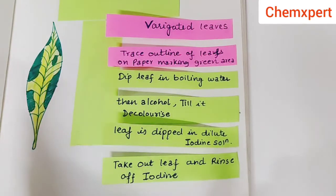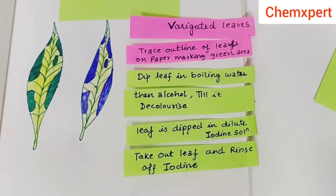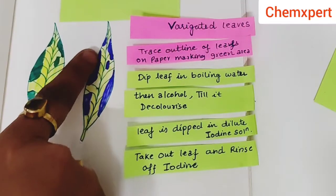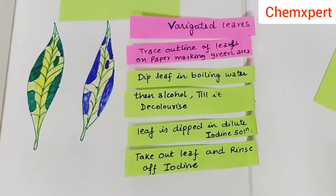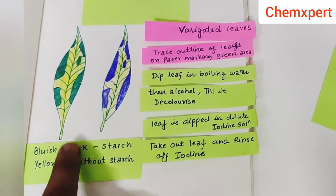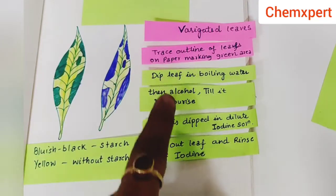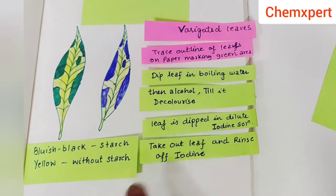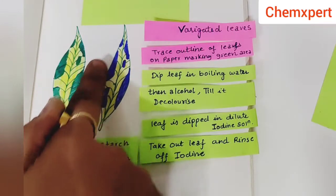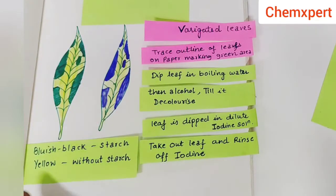Now for the observations: when we rinse off the iodine solution, the green part of the leaves turns bluish-black in color, and the rest of the part remains pale in color. We conclude that the bluish-black color occurs because of starch formation. The iodine test is performed to detect the presence of starch. If a leaf turns bluish-black, starch formation is taking place, whereas the yellow portion is without starch, which is why there is no color change.